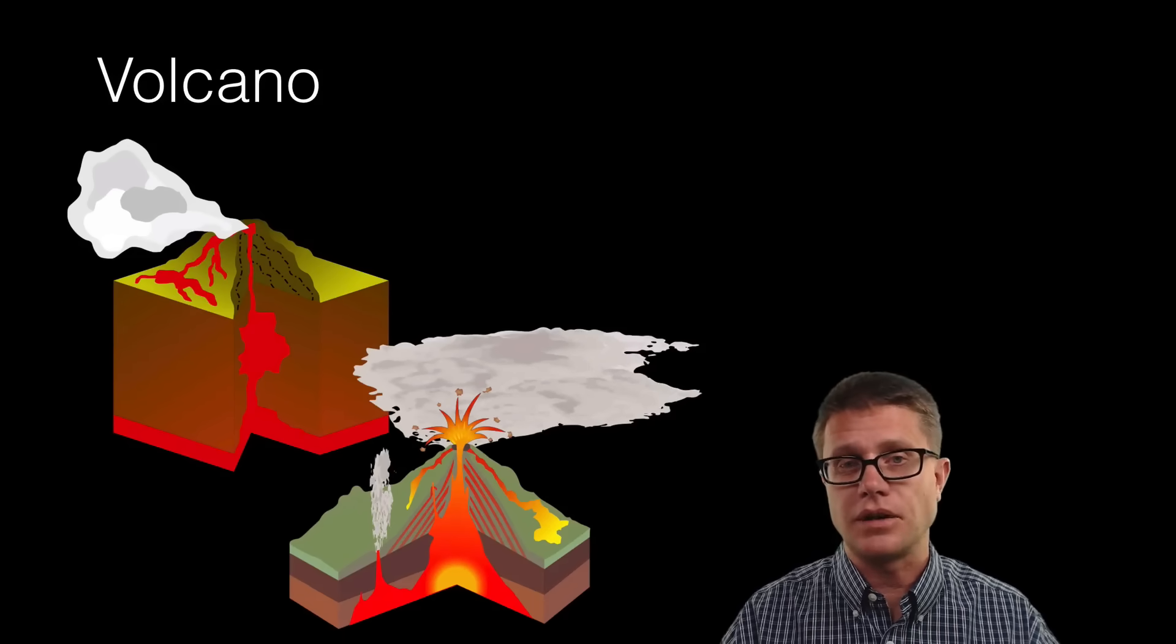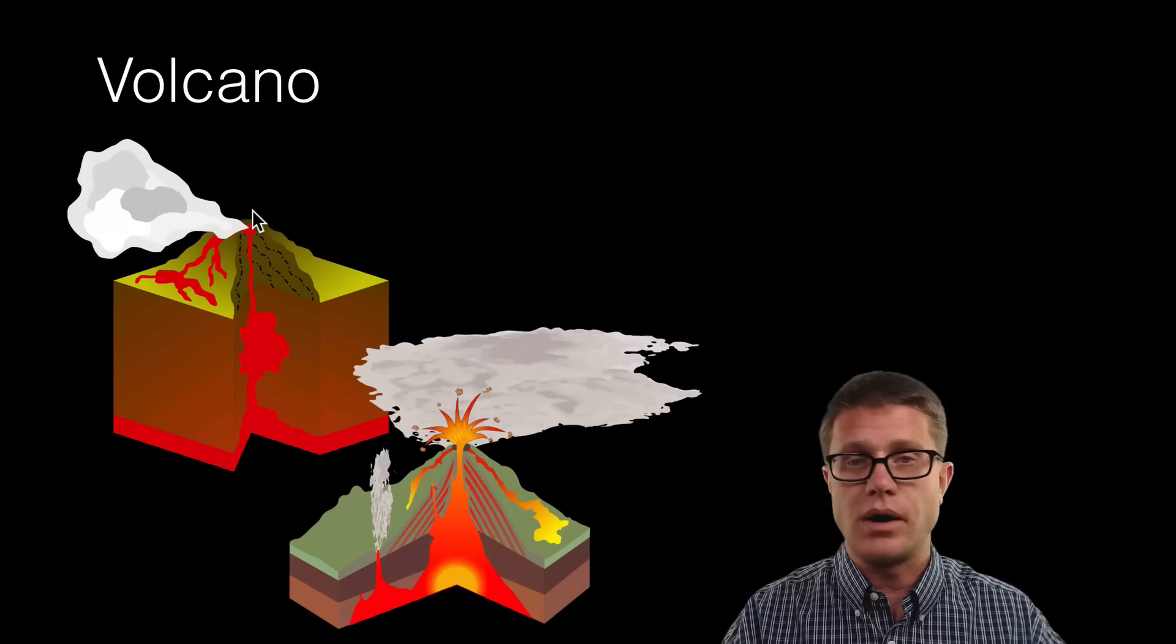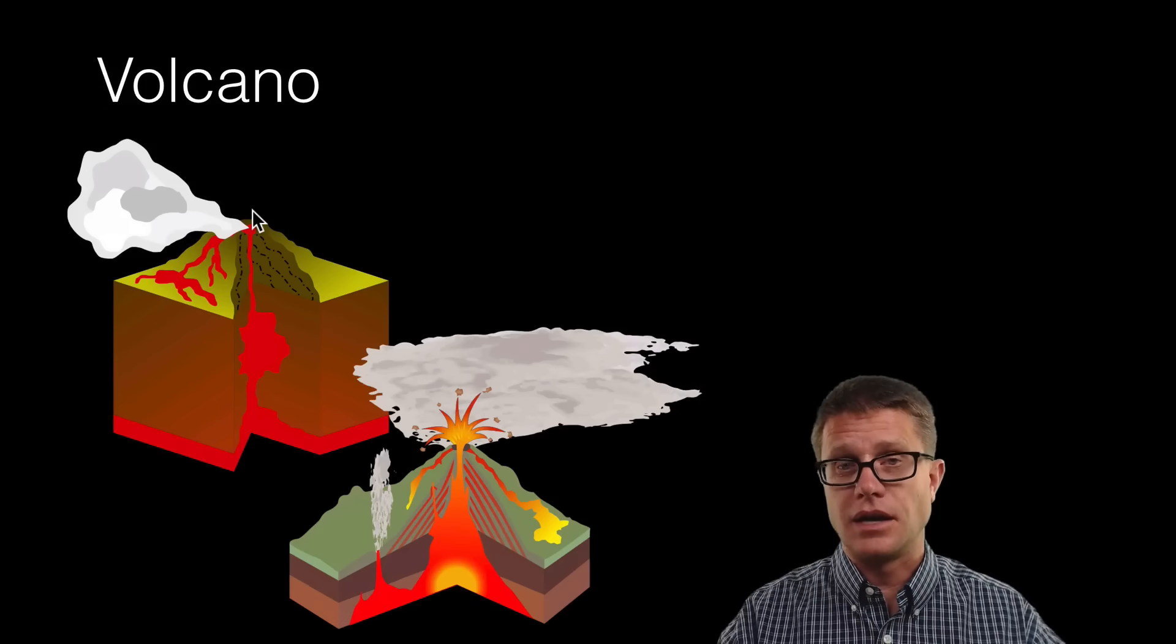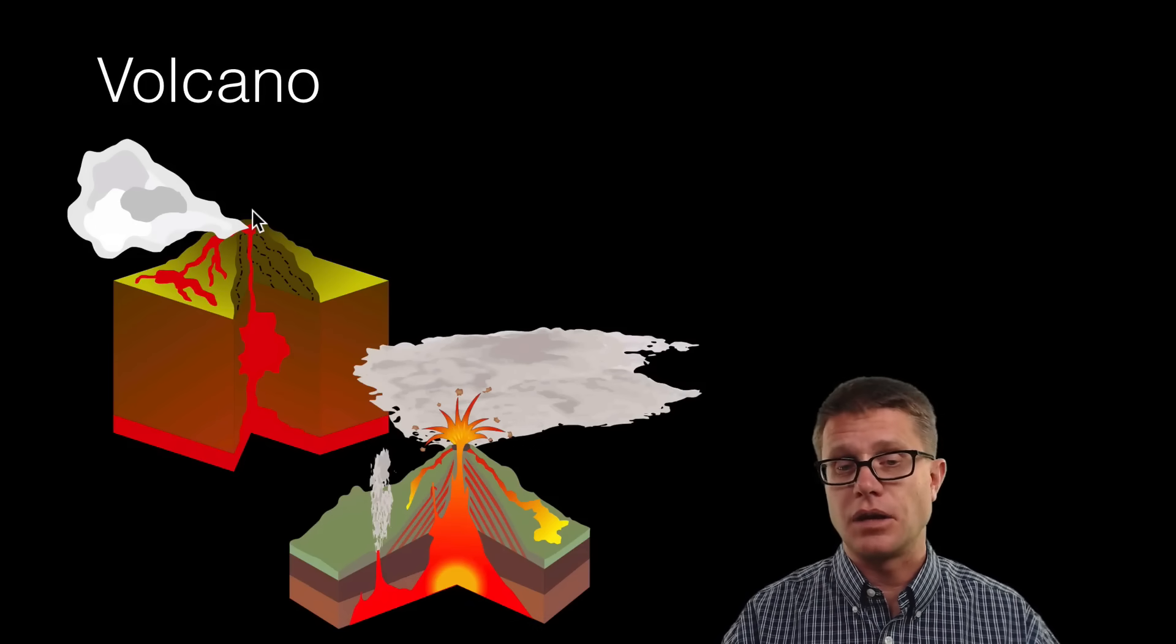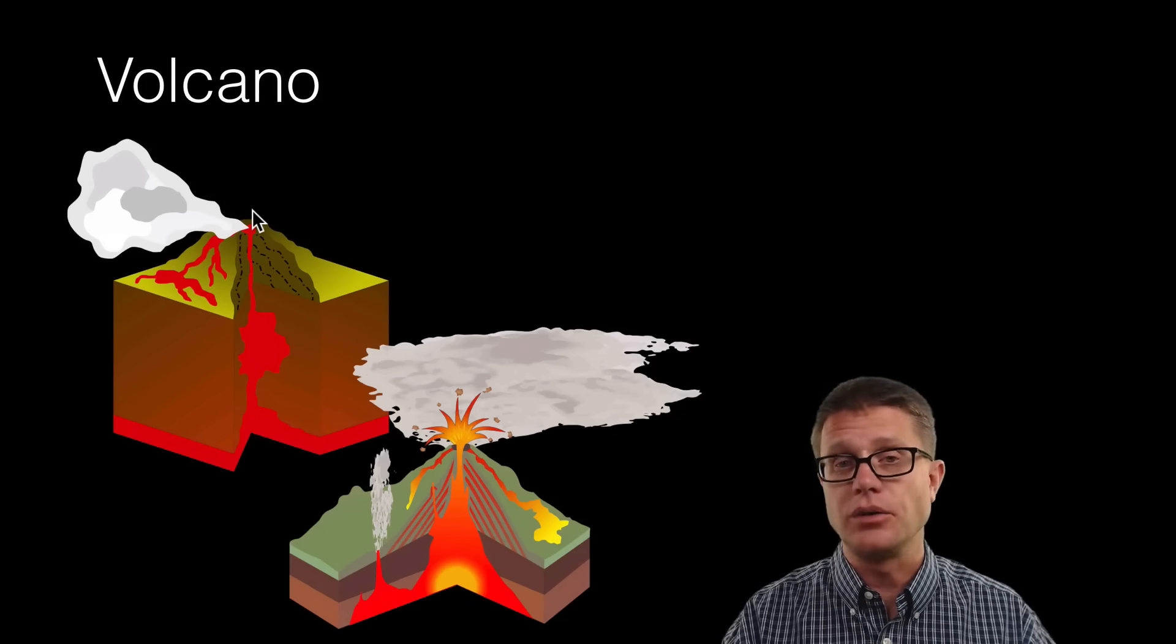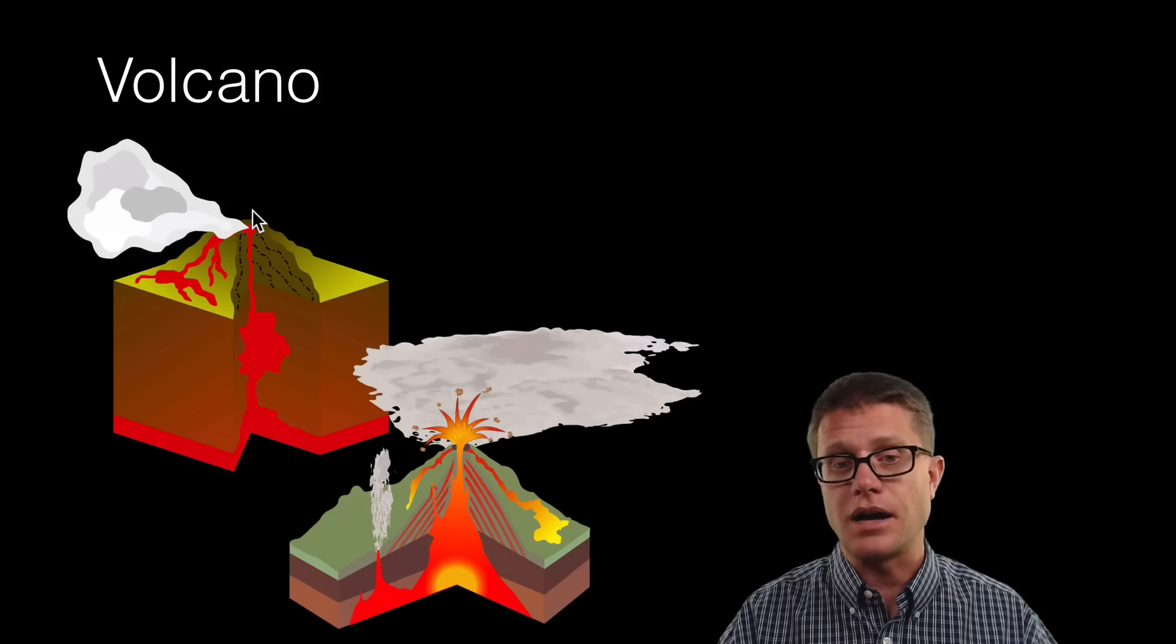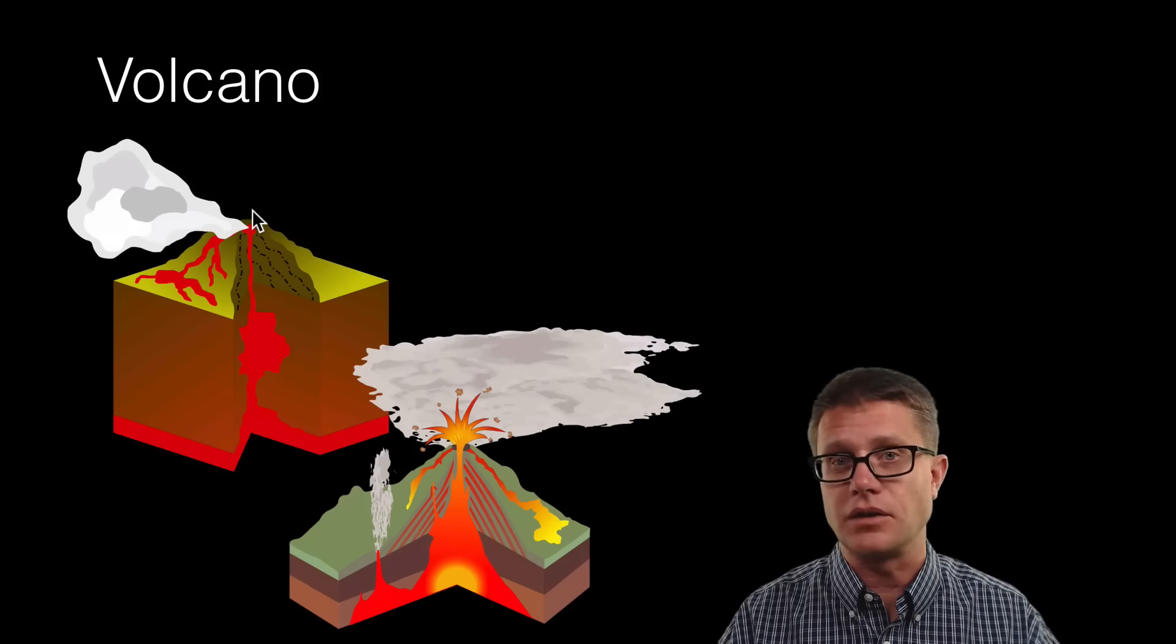So an example could be volcanoes. Some volcanoes, like the ones we would find in Hawaii, can ooze out. And as long as we are able to move out of there quickly we are going to be fine. But some are highly explosive. And it depends on what minerals make up that rock that determines the explosiveness of the volcano.